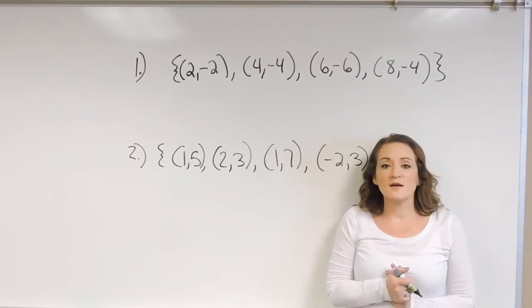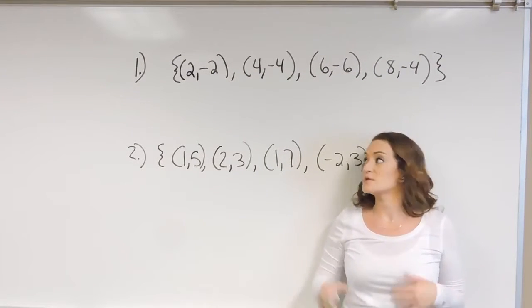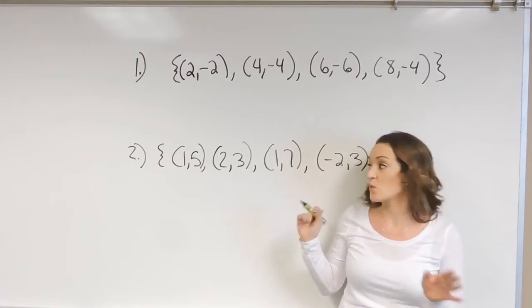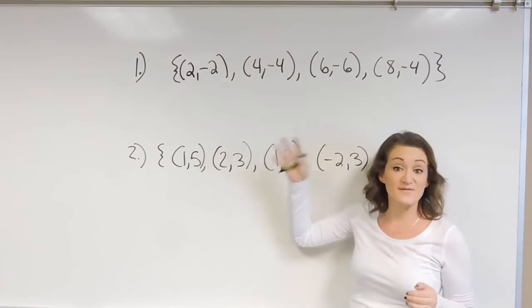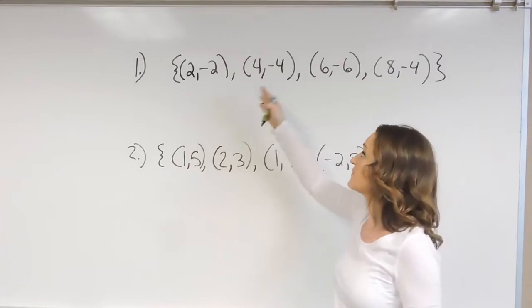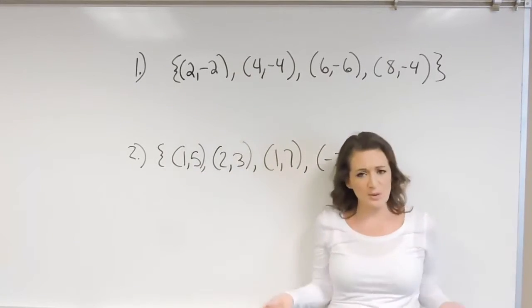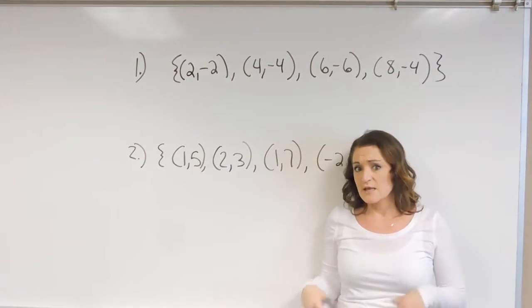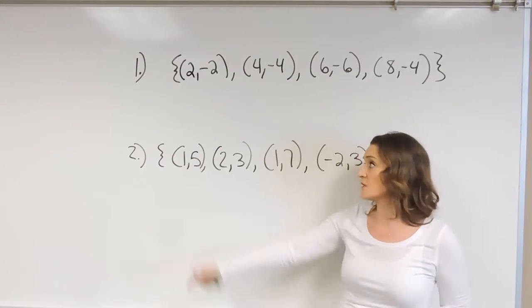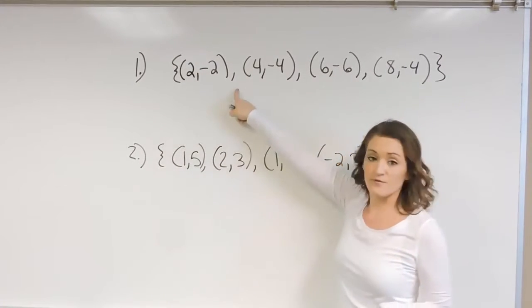Okay, so let's talk about how do we figure out if we have a function when we're given an example like this here where we're given a set, right? So if we have a set of ordered pairs, how do we figure out if it's a function or not? And then if it is, let's state the domain and range of it. So let's take a look at the first example that I have right here at the top.